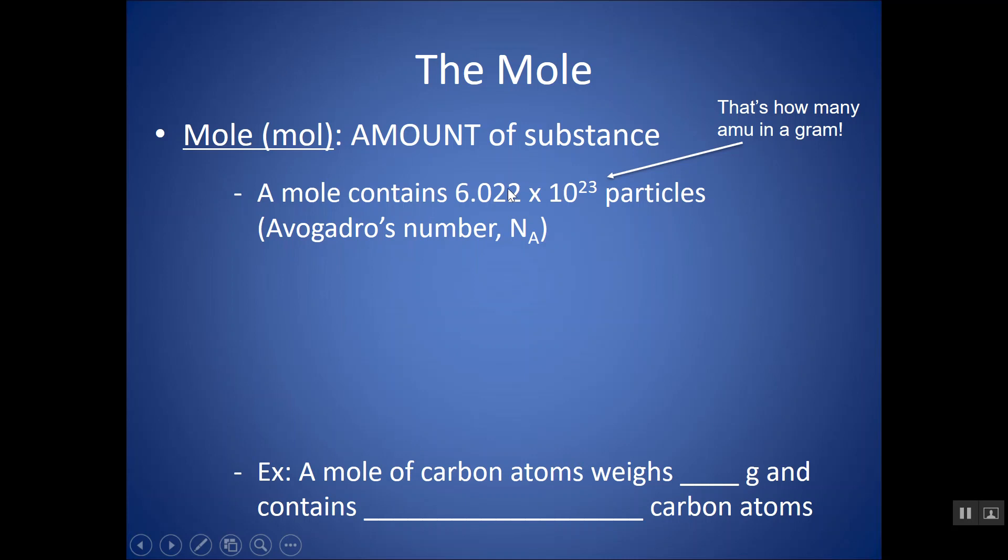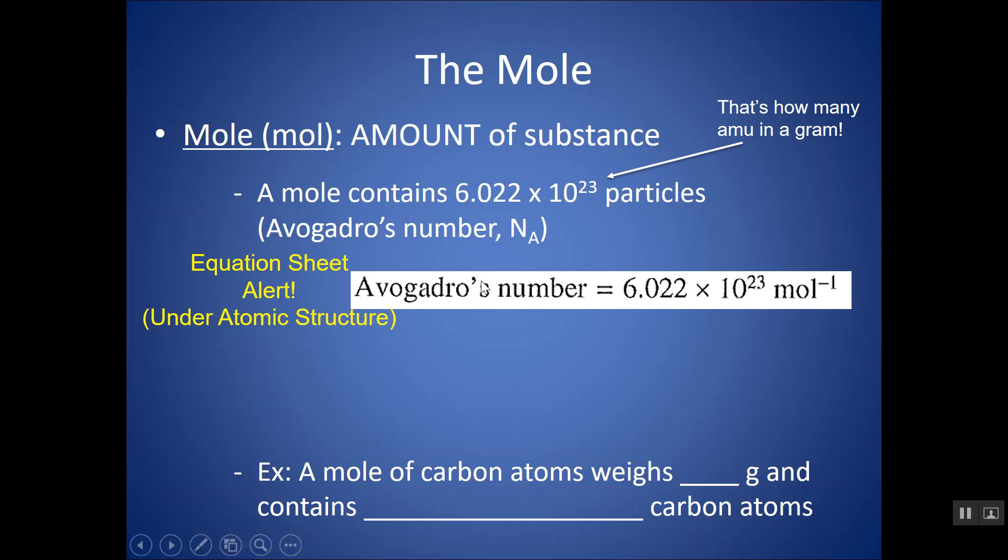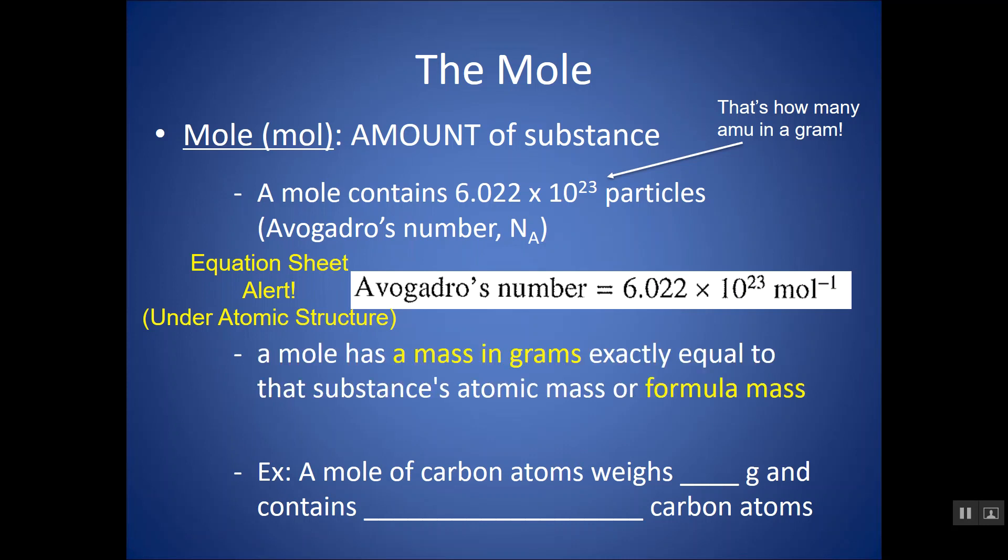Why is that important? That's actually how many AMU are in a gram. That's how it works out. Because of assigning this, and this is on your periodic table, this number too, so you really don't have to memorize it, but you'll use it so many times that you do.